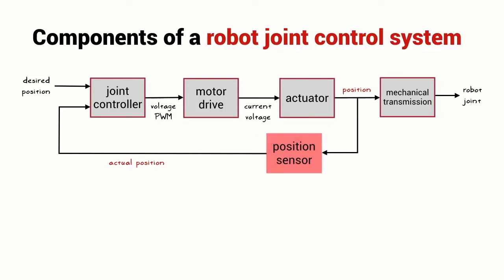An input to the system is the desired position. We want to move the motor until the actual position equals the desired position, and that's the job of the joint controller, typically an embedded microcontroller. It's code running on a microprocessor that provides appropriate commands to the motor so the actual position matches the desired position.